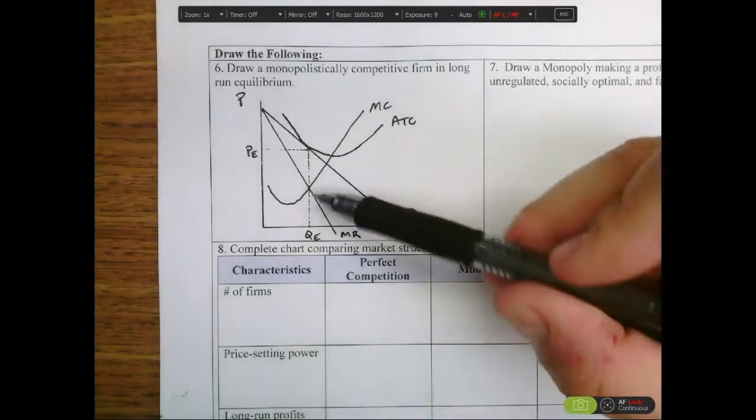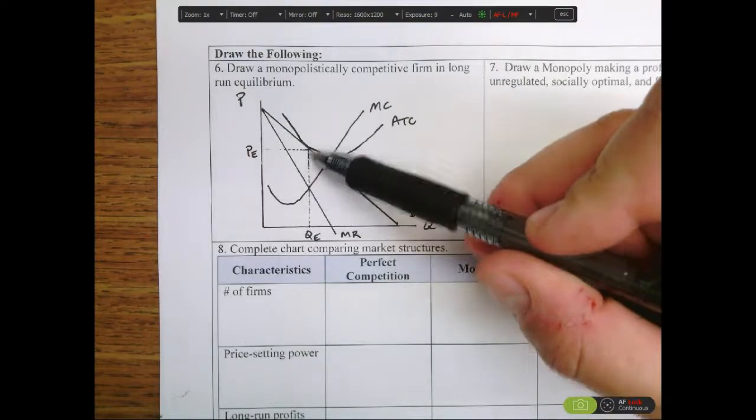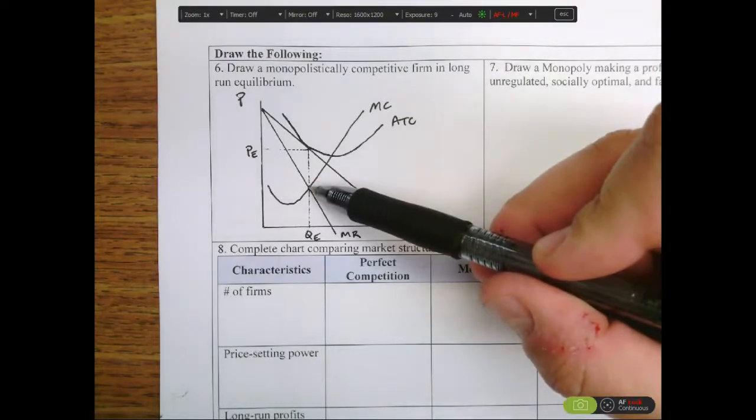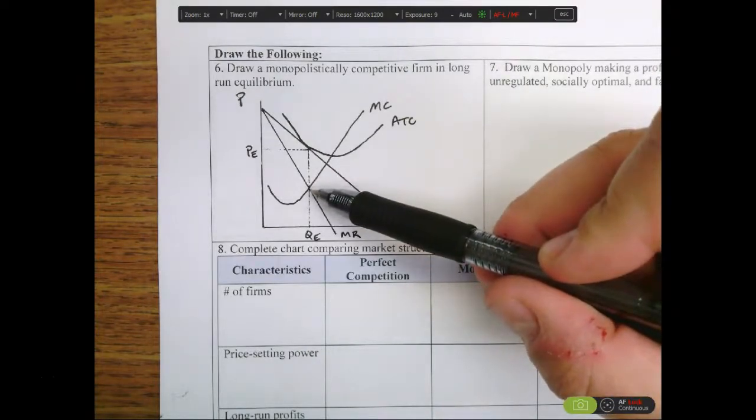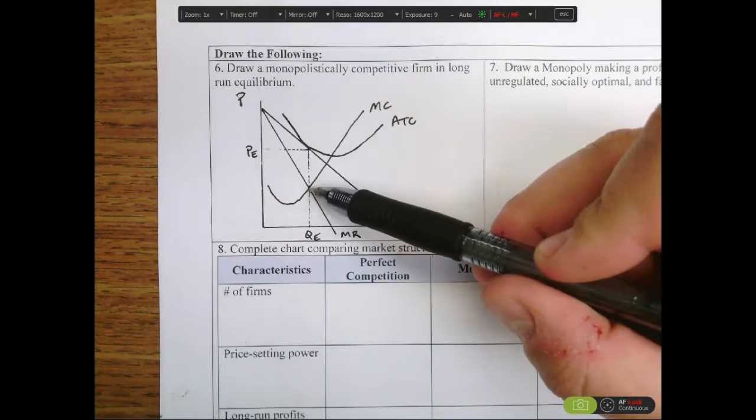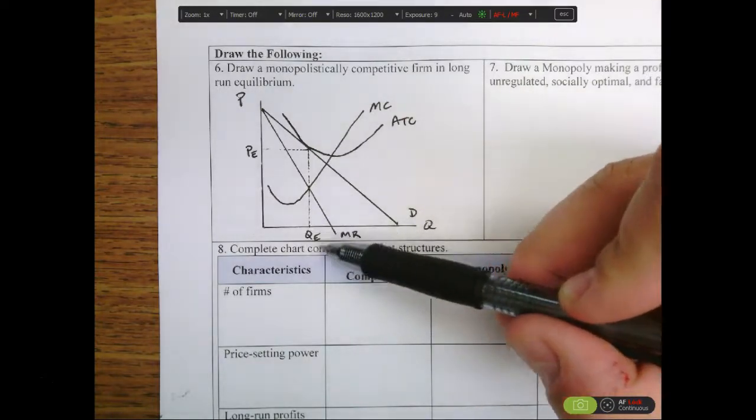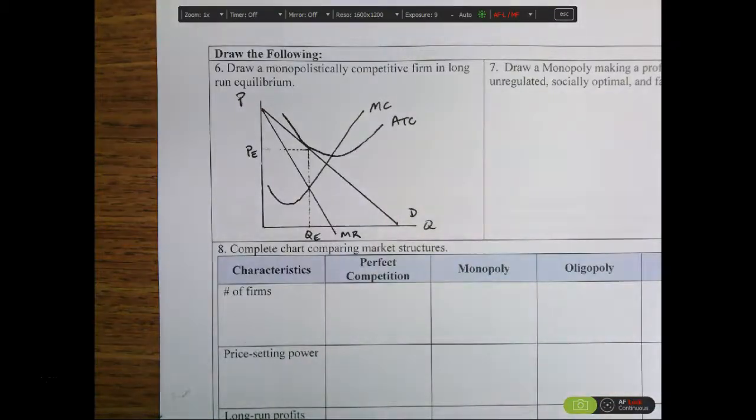While the monopolistically competitive firm has control over price because price is going to be greater than marginal revenue, it's still going to follow the optimal output rule where marginal revenue equals marginal cost for our optimal level of output that maximizes profits.